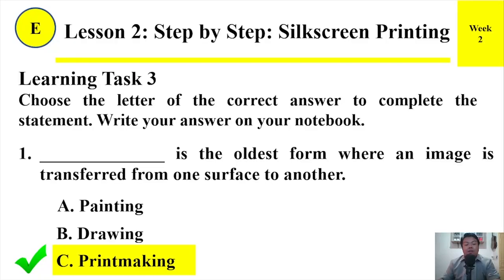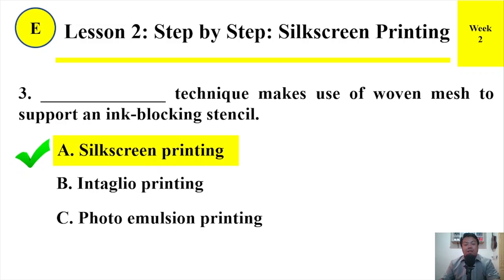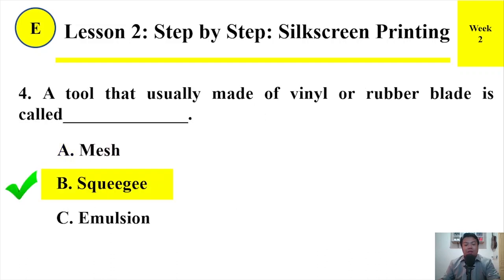Here are the answers. Number 1: Printmaking is the oldest form where an image is transferred from one surface to another. Number 2: The answer is A — Wood. Screen frame is commonly made of wood, covered tightly with a mesh. Number 3: The answer is A — Silk screen printing. Silk screen printing technique makes use of woven mesh to support an ink-blocking stencil. Number 4: The correct answer is B — Squeegee. A tool that is usually made of vinyl or rubber blade is called a squeegee.